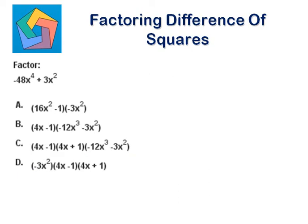Next problem: factor minus 48 times x to the power 4 plus 3 times x to the power 2. Now you can see they are not perfect squares here — something is common between them. So first of all we will take out the common factor. The GCD of 48 and 3 is 3, and between x to the power 4 and x to the power 2 we can take out x to the power 2.